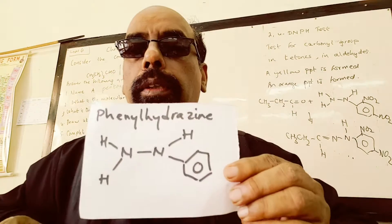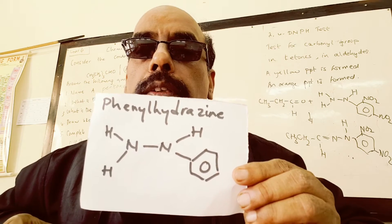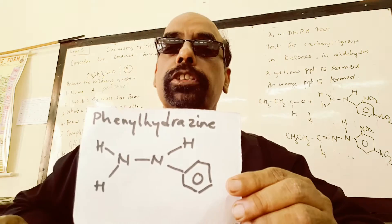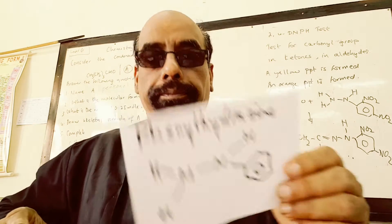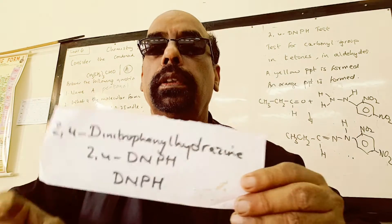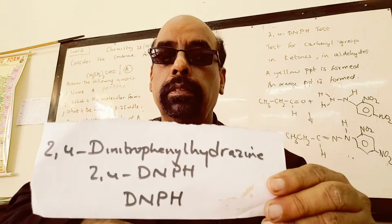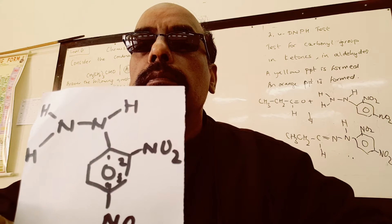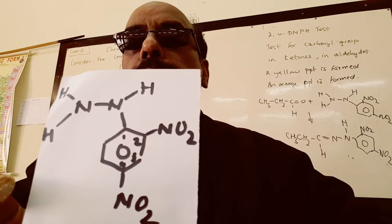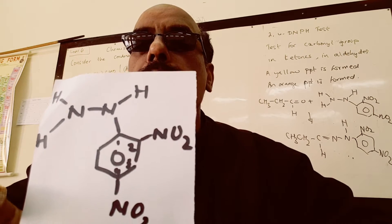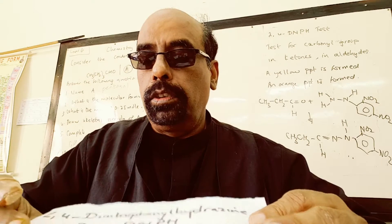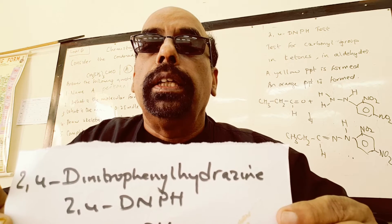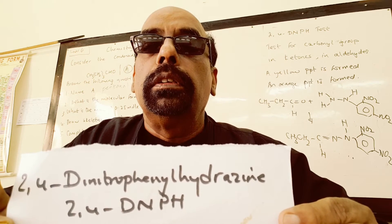From hydrazine, we can understand the structural formula of phenyl hydrazine. One hydrogen in hydrazine has been substituted by a phenyl group. 2,4-DNPH has nitro groups at the 2 and 4 positions in the phenyl group bonded to hydrazine.